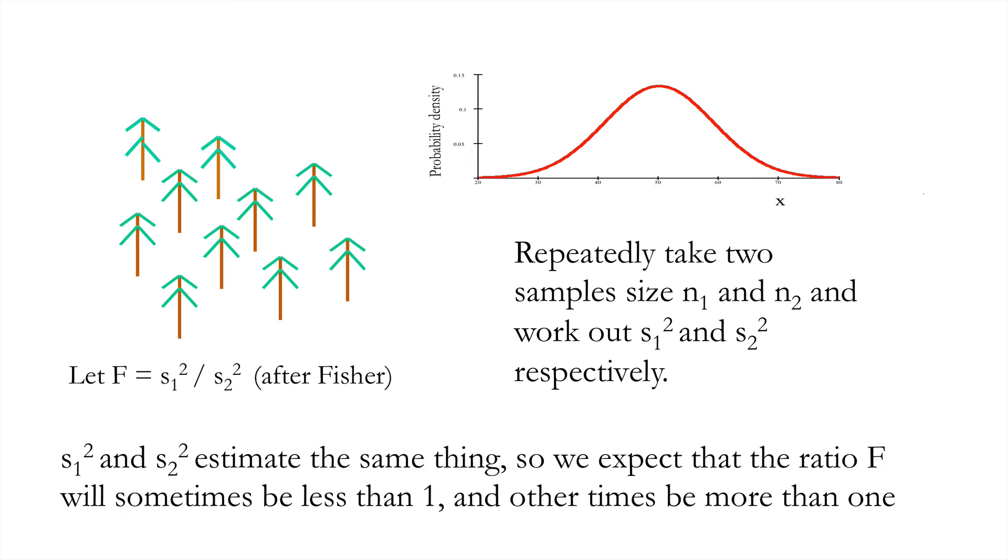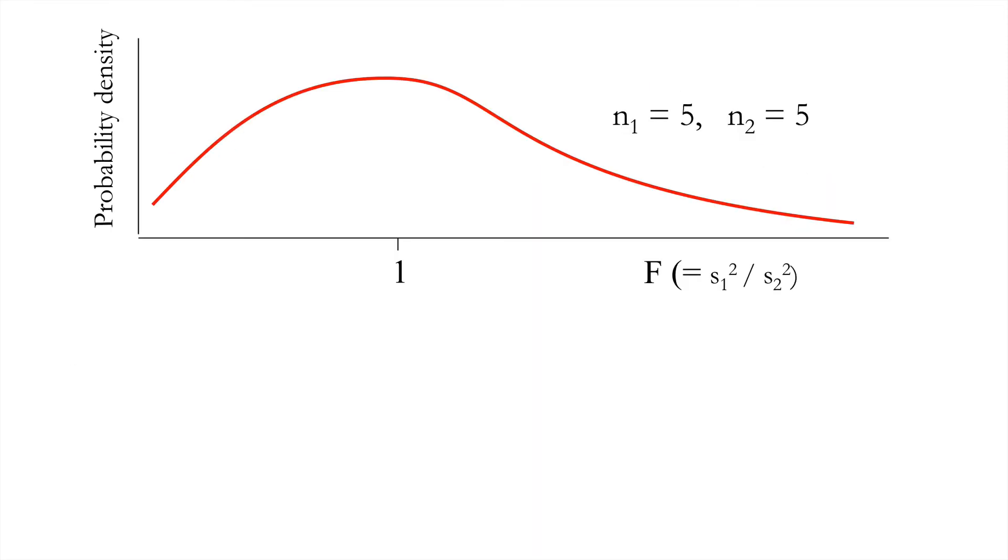Clearly, S1 squared and S2 squared estimate the same thing, so we expect that ratio F will sometimes be less than one, and sometimes be more than one. Imagine if we took two samples of size five. There is a theoretical distribution for the expected ratio of those two estimates of the variance. And here it is. Some values will be less than one, some will be more than one. But by nature of the fact that it's a ratio, it will be constrained between 0 and infinity. So it's not going to be a symmetrical distribution. It will actually be a rather skewed distribution.